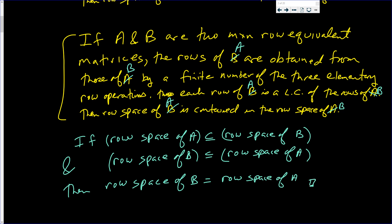And that's exactly what we wanted to show. If two matrices are row equivalent, then they have to have the same row space.